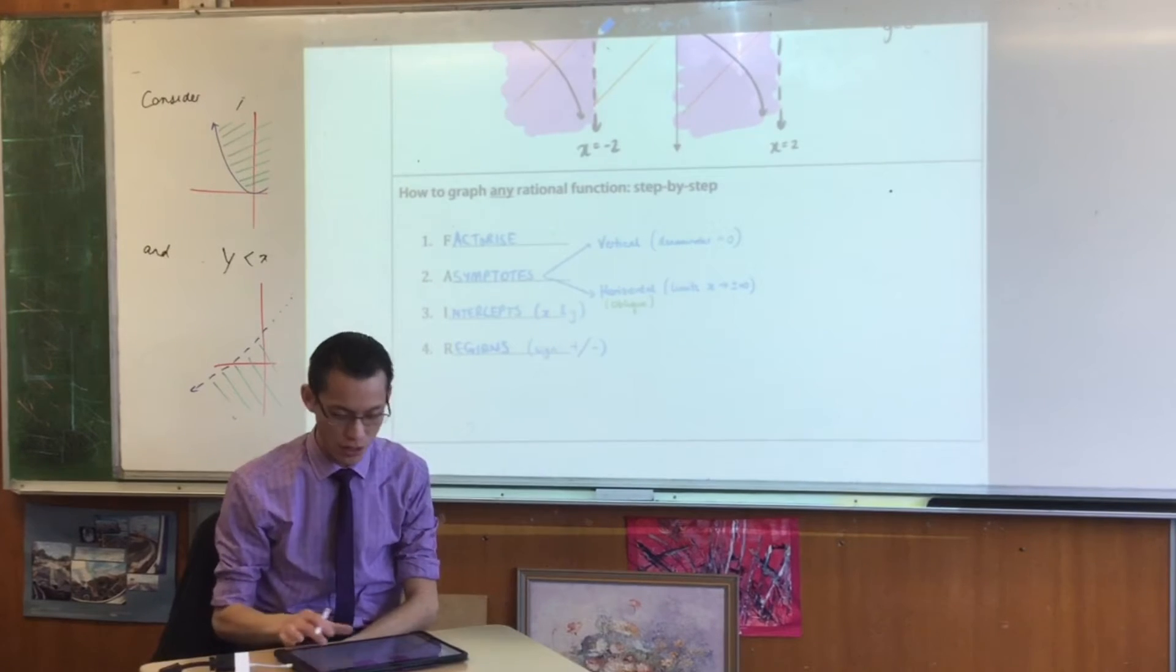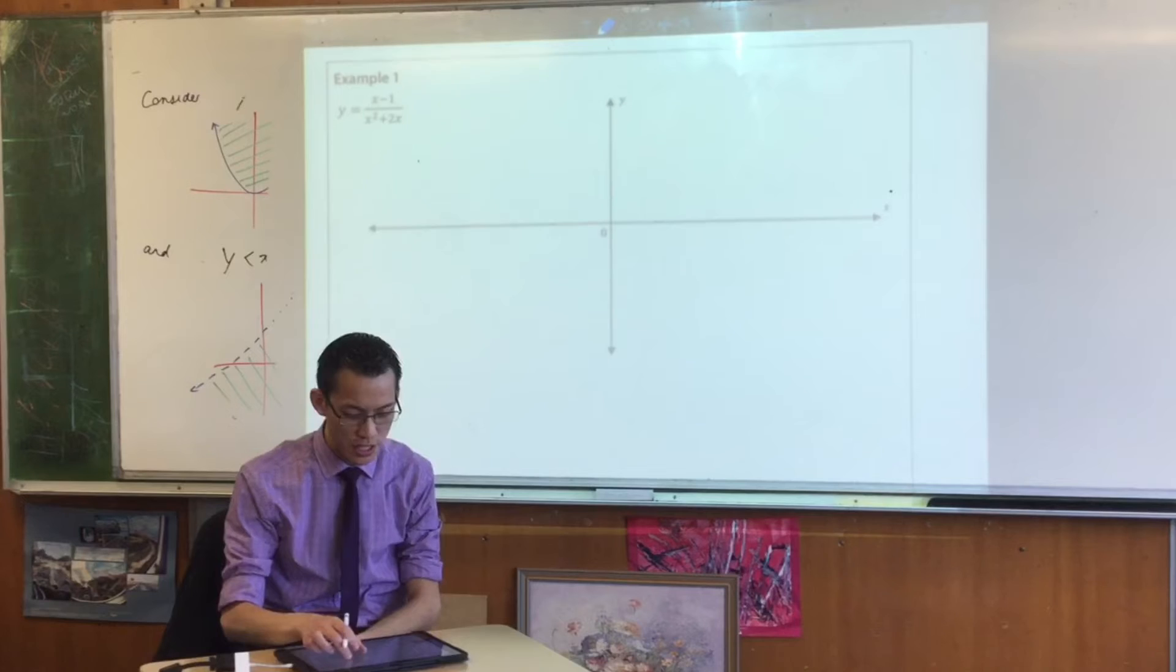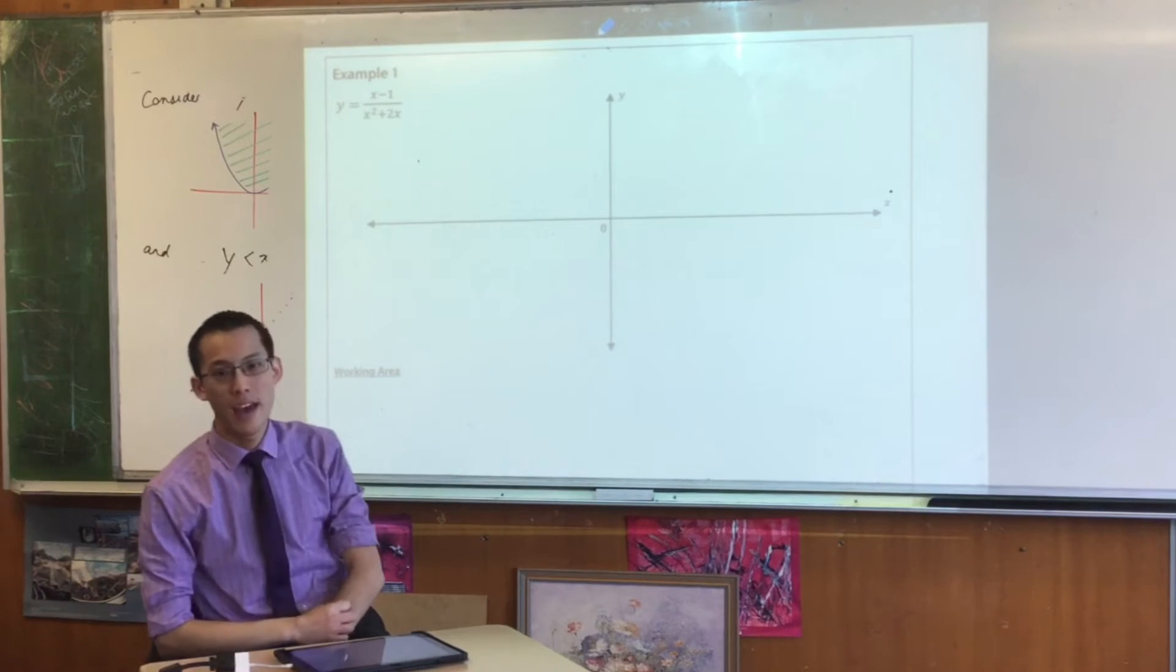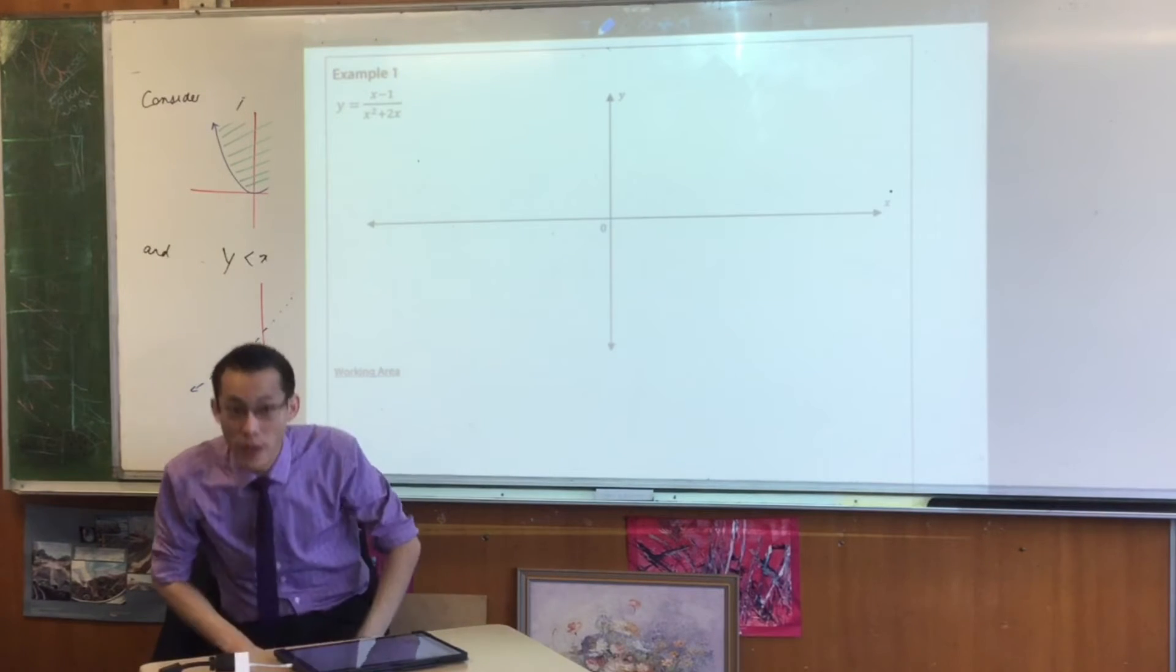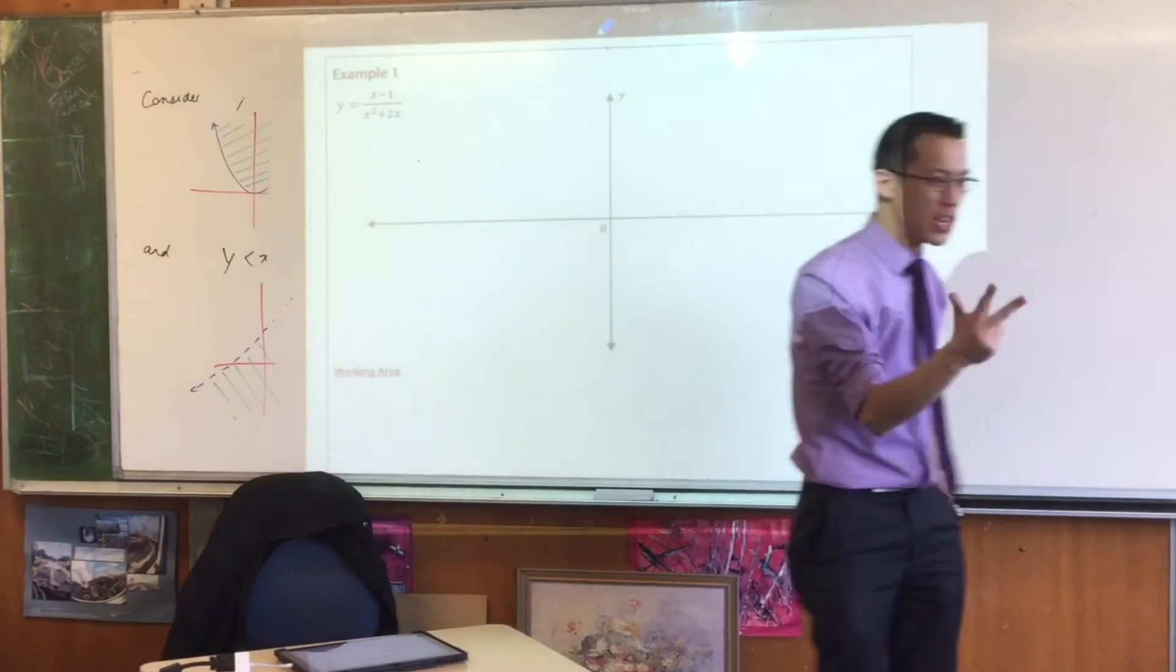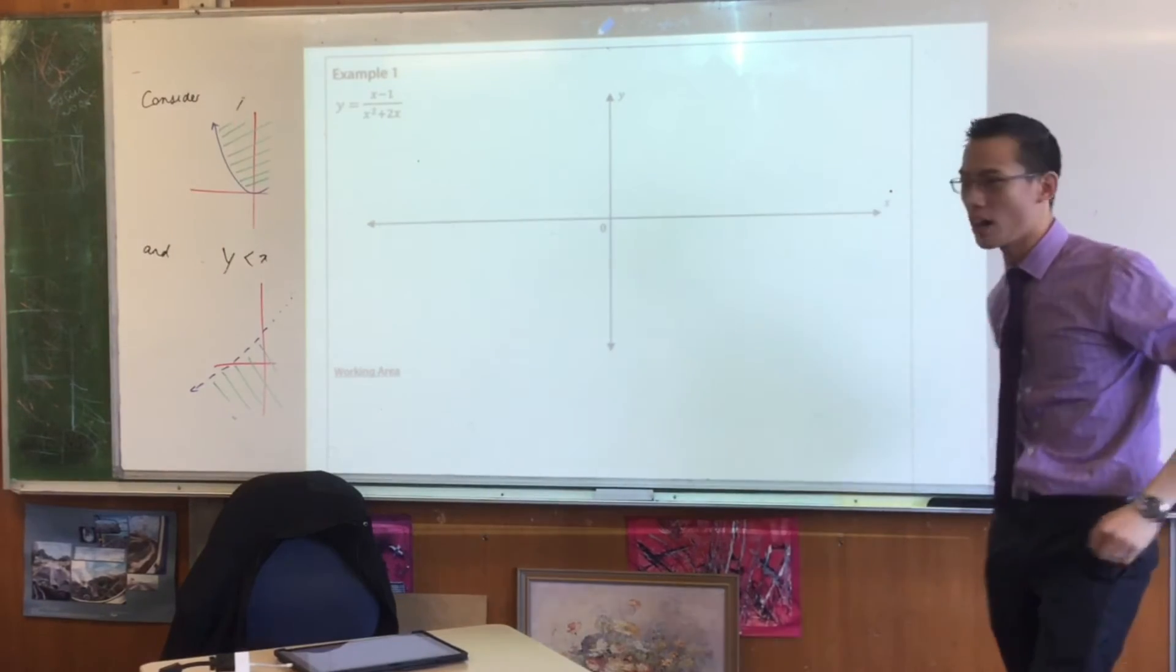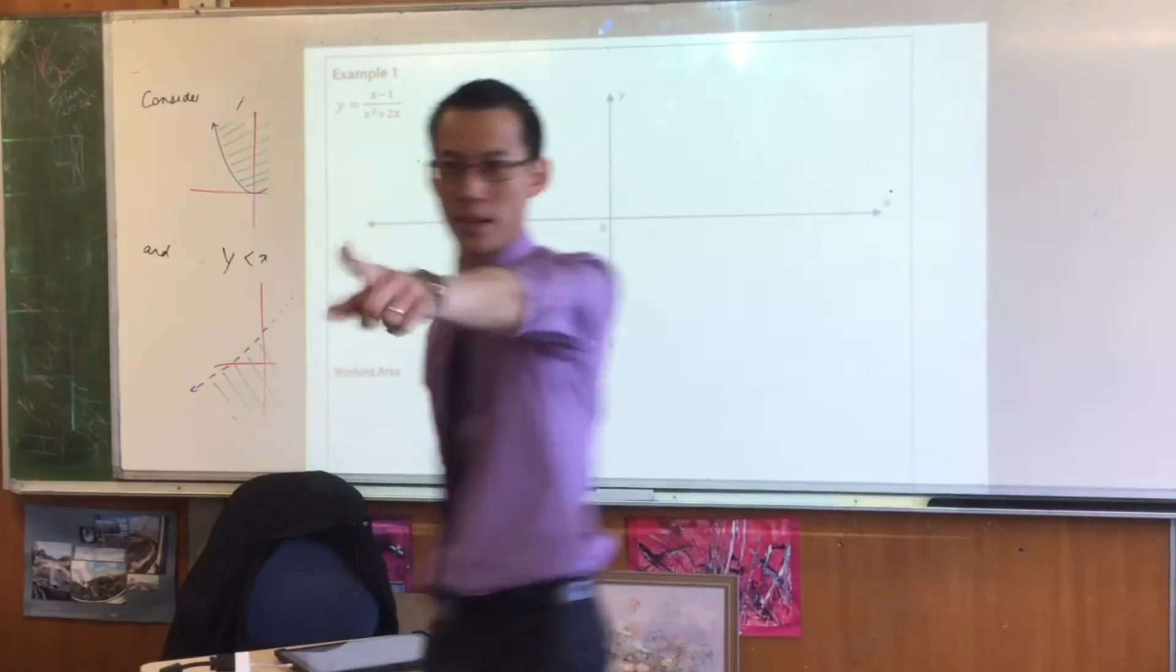These four steps will get you through. So what I want you to have a go at is using those four steps on this graph here. x minus 1, x squared plus 2x. Factorize. Search for your asymptotes. Evaluate your intercepts. If there are any, shade some regions, and then off you go. I'll let you have a few minutes to get a heads out of me.